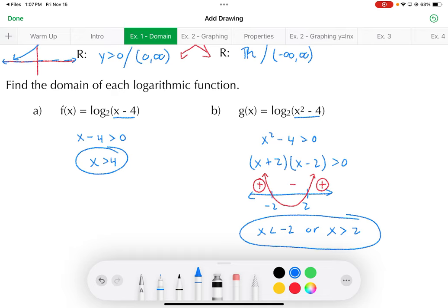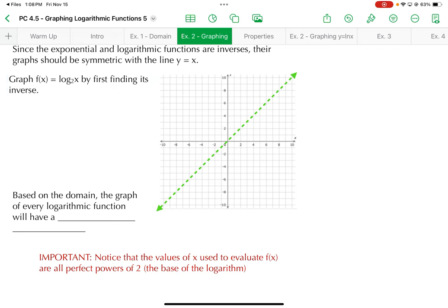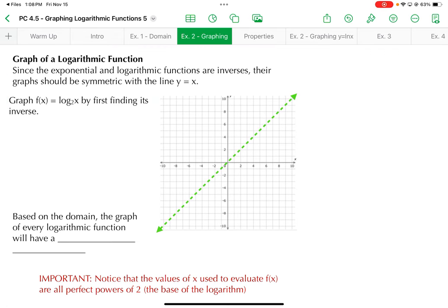All right, so example 2. Let's start graphing these logarithmic functions. Since these are inverses of exponentials, they should be symmetric over the line y equals x with their inverse function. So, let's say I want to graph f equals log base 2 of x. One way of doing that is graph its inverse first. Once I have those points, I can switch their x's and their y's to reflect them over y equals x and give me the new graph.